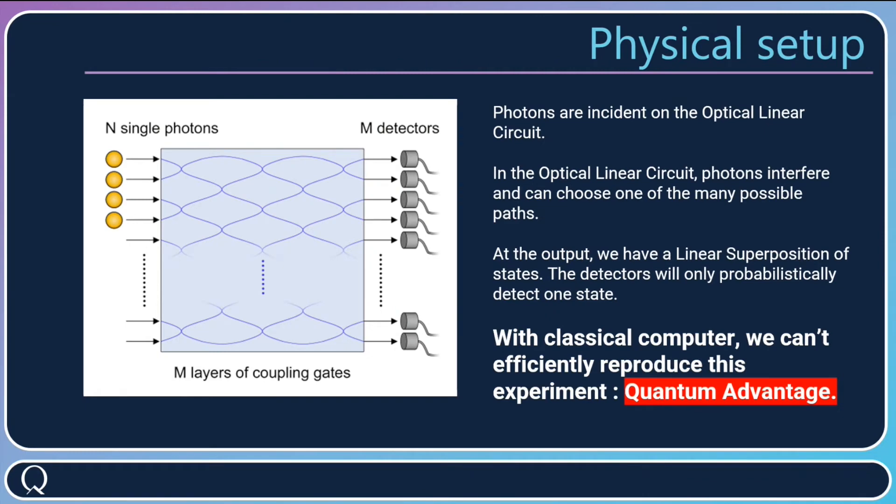So what does it mean physically? What is actually a boson sampler? You have your photons that are incident on your optical linear circuits. In the optical linear circuits, photons interfere. They can choose one of many possible paths.